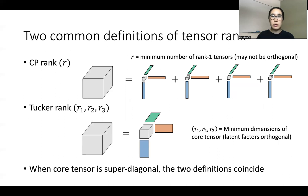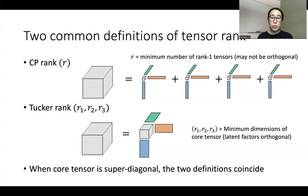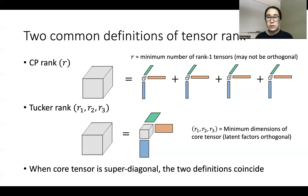There are two common definitions of tensor rank that we'll focus on. The CP rank is the minimum number of rank-1 tensors whose sum equals the original tensor. The Tucker rank arises from a higher-order singular value decomposition, where you write the tensor as a multilinear multiplication of latent factor matrices corresponding to each mode, as well as a core tensor. The latent factors of these matrices are orthogonal, whereas in the CP rank decomposition, the latent factors of the rank-1 tensors may not be orthogonal.